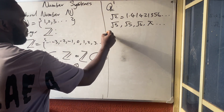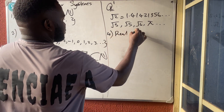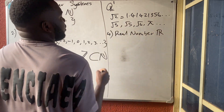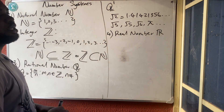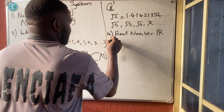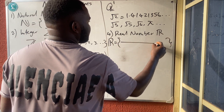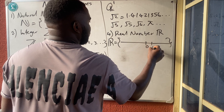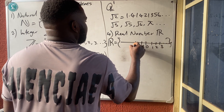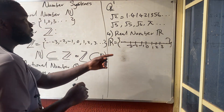Number four are the real numbers, represented with R. Real numbers are simply the set of numbers found on a number line. On the number line we have: ..., -3, -2, -1, 0, 1, 2, 3, ... The difference between integers and real numbers is that with integers we always know the next number after any given number.